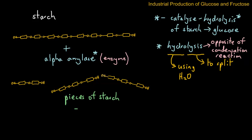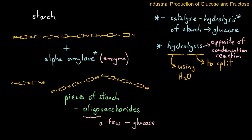These small pieces are called oligosaccharides. 'Saccharides' means sugar, and 'oligo' means a few — so we have, in effect, a few glucose units. That was the first step in the industrial production of glucose and fructose from starch. We've split up our polysaccharide into small pieces of oligosaccharides. In the next video, we look at the second stage of this three-stage process.